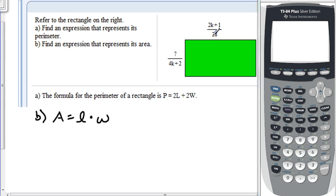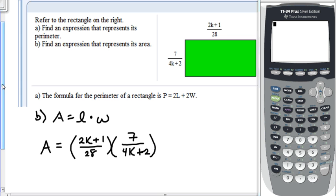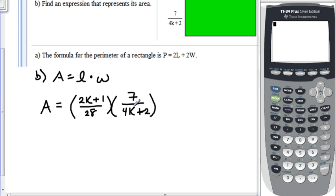Once again, we're going to say 2K plus 1 over 28 is the length. And we are also going to say that 7 over 4K plus 2 is the width. So, area equals, let's put the length in first, 2K plus 1 over 28 times the width is 7 over 4K plus 2. Recall that from the previous part with the perimeter, we factored this bottom part here.